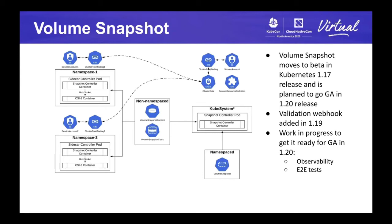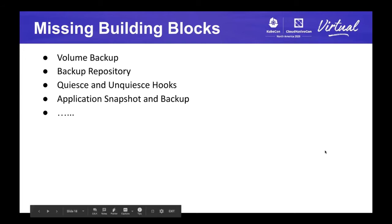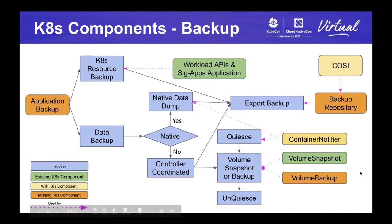So we've talked about existing building blocks — what are missing? We're missing a whole lot, and this is not yet a complete list. Volume backup, backup repository, quiesce and unquiesce hooks, etc. If you take a full picture of this — all the green boxes are currently existing, the yellow boxes are works in progress, and the orange boxes are not there yet. Those components — application backup — can be used to group resources and coordinate data backup as well. A container notifier fits in multiple scenarios in the backup workflow.